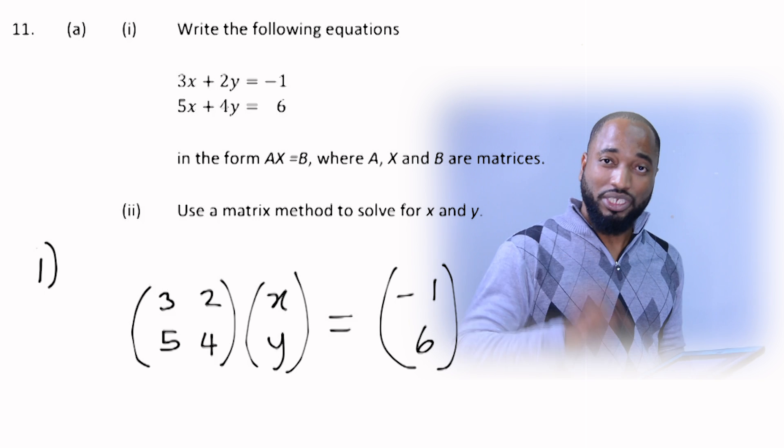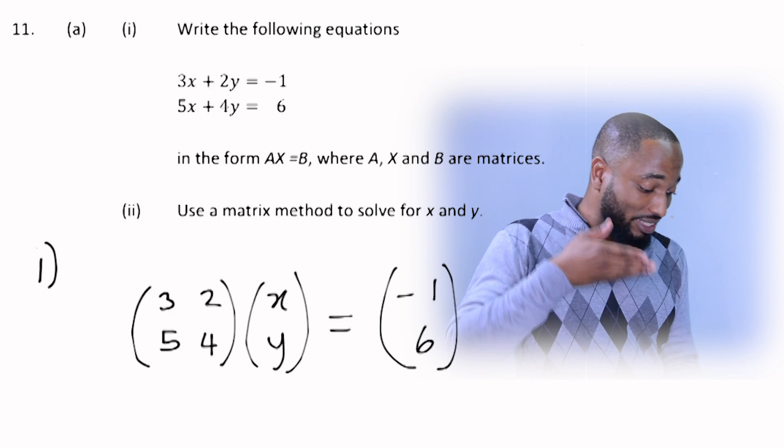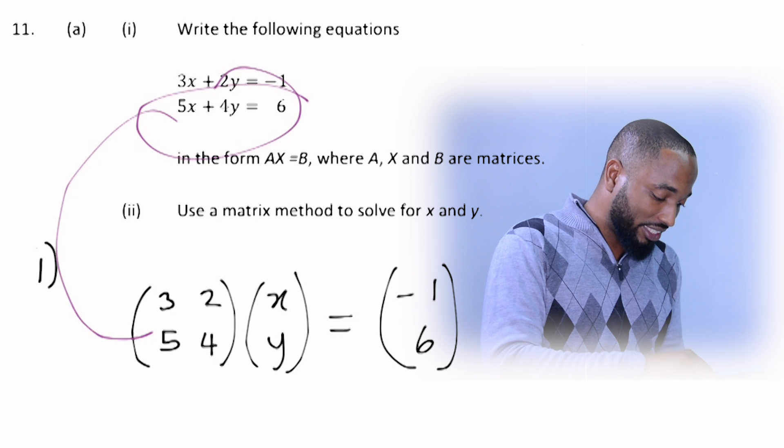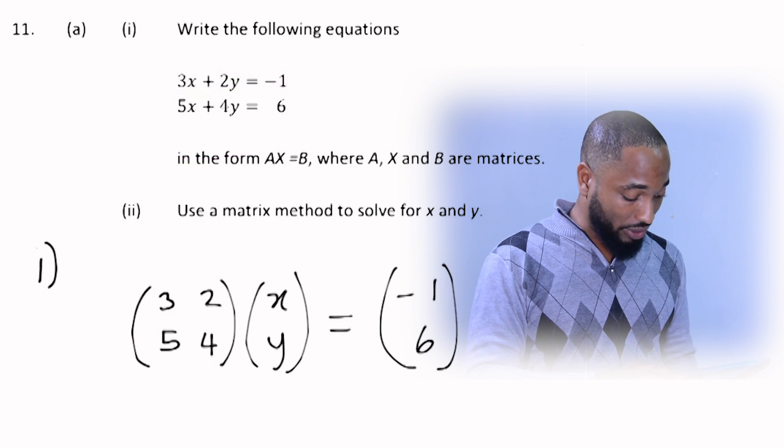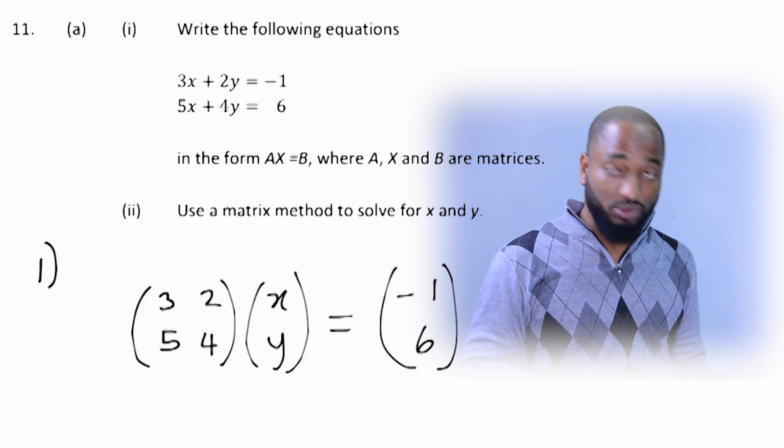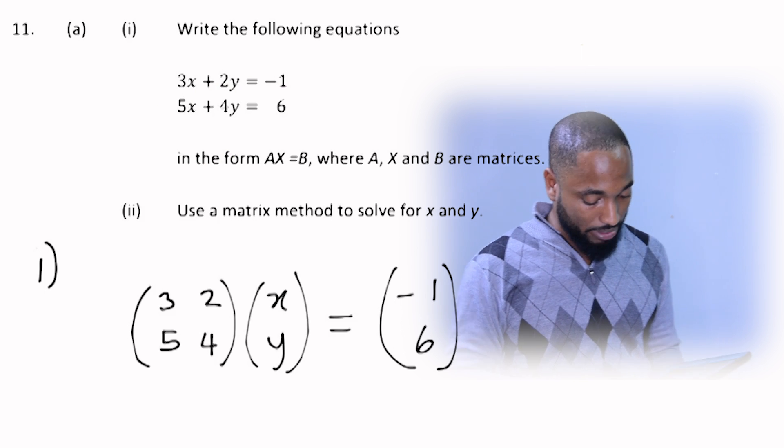So just by doing this, a lot of the times I've seen the past paper, just by writing down this, taking this and sending it to this form, you get two marks. They are giving you three marks right now for it. So that's a quick three marks.